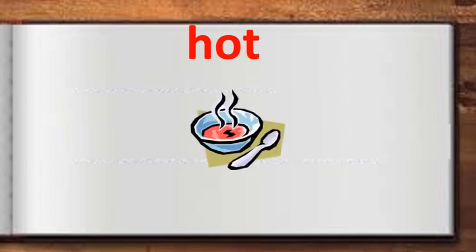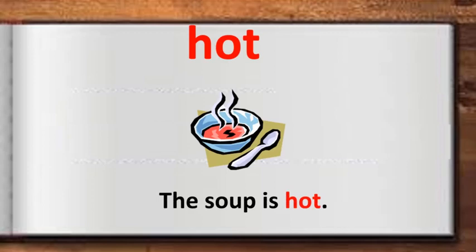The word is 'hot.' Repeat after me. What does 'hot' mean? Hot is something with high temperature. Look at the image of soup — I have used the word 'hot' in a sentence: 'the soup is hot.' You can see the flames coming out of the soup, so you can understand it's hot.